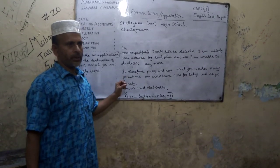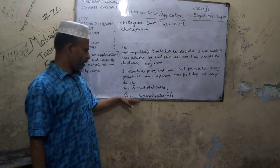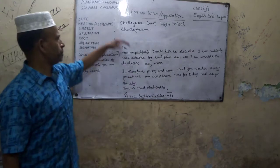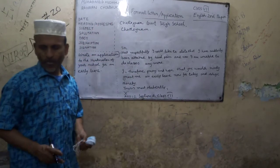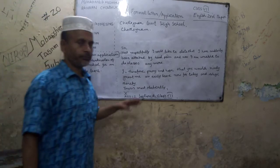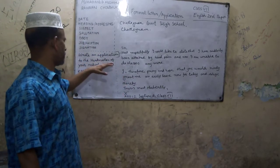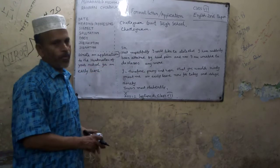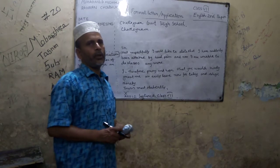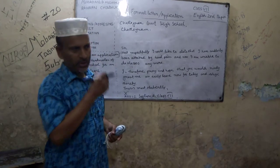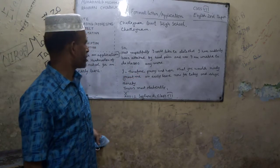When you write the application, you have to sign here. Roll Number 1, Section A, Class 7, Chapter 1, Government High School. Our problem was: write an application to the headmaster of your school. I hope you have understood the way of writing an application.